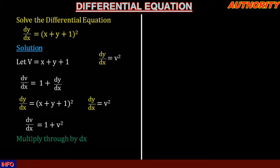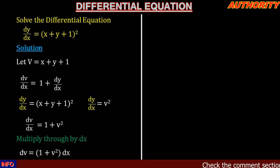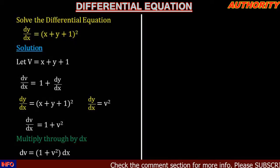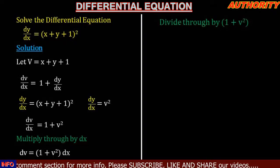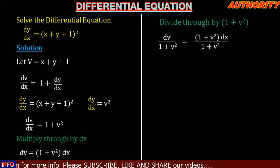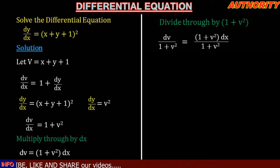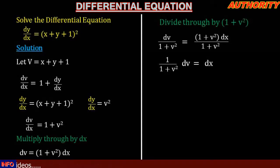Now let's multiply both sides by dx: dv = (1 + v²) dx. We want to separate the variables, so let's divide both sides by (1 + v²). This gives us dv/(1 + v²) = dx.